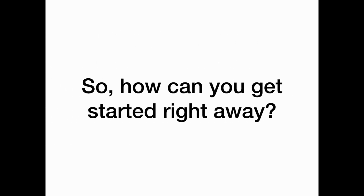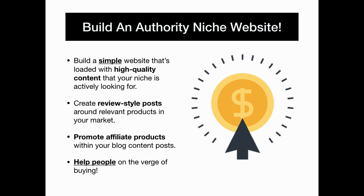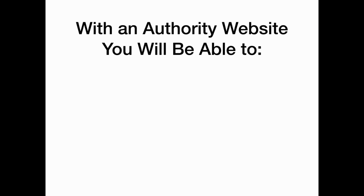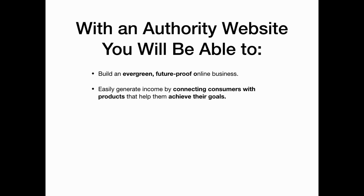So how can you get started right away? By building an authority niche website. Build a simple website that's loaded with high quality content that your niche is actively looking for. Then create review-style posts around relevant products in your market and promote affiliate products within your blog content posts. Help people on the verge of buying. With an authority website, you'll be able to build an evergreen, future-proof online business. Easily generate income by connecting consumers with products that help them achieve their goals.